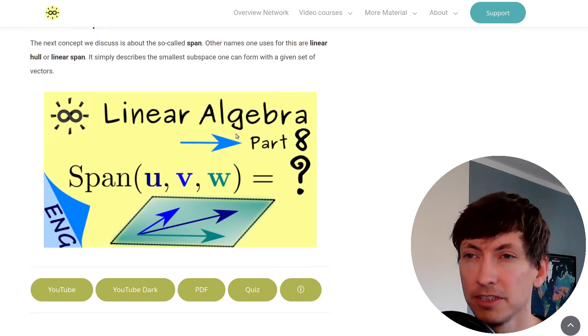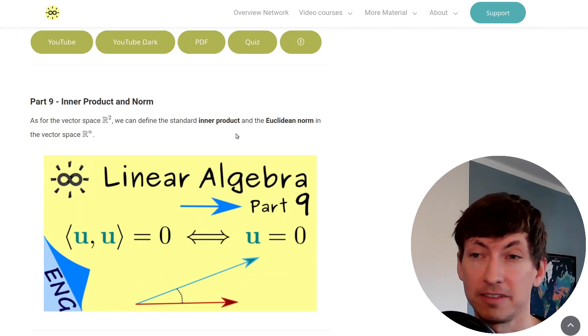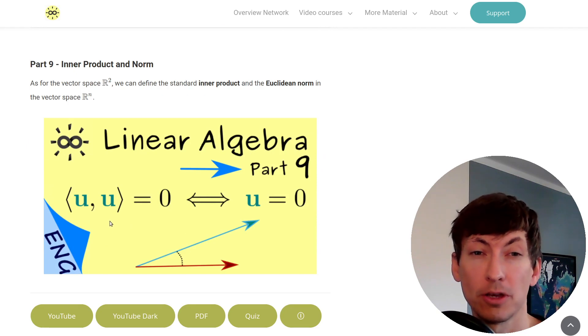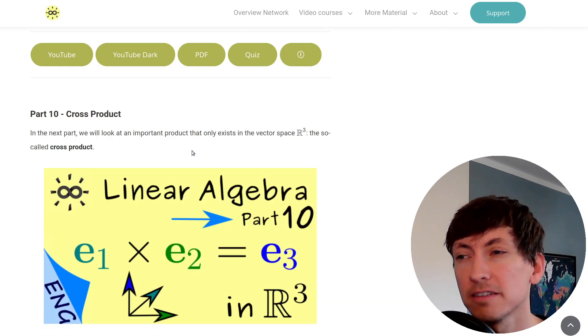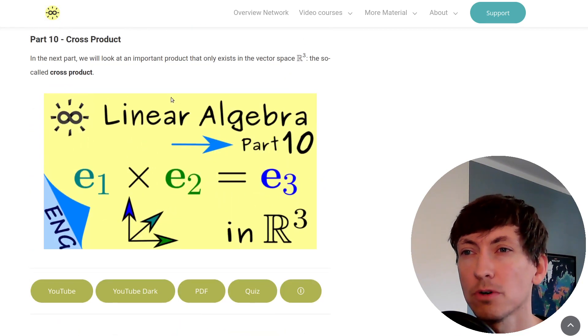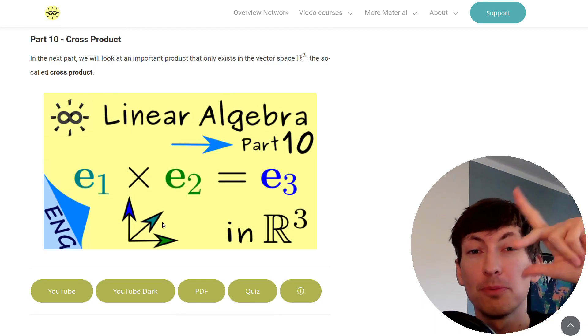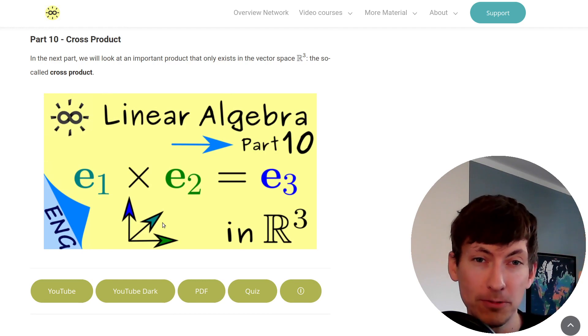In the next two videos we will talk about products in Rn. For example, here again we have the inner product which measures angles. Then the next product is very special because it only exists in R3. It's the so-called cross product or vector product. This one helps you if you want to construct a new perpendicular vector if you already have two, and therefore it's very useful in applications.